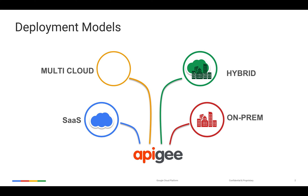One more deployment model that Apigee Edge supports is multi-cloud — typically on-premise across different clouds. Apigee is a distributed architecture where you can use Apigee on-premise on multiple cloud providers. For example, if you have back-end workloads on different clouds and your own data center — like an HR management system on AWS, a CRM system on Google Cloud, and a core banking system in your private data center — you can install Apigee Edge gateways or message processors in each cloud and manage all those APIs through a single management UI.